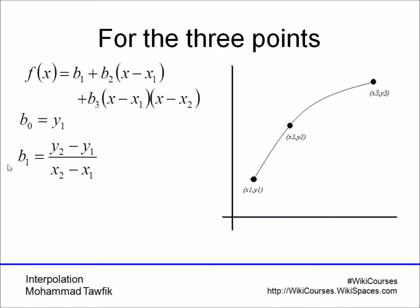b2 in this equation equals y2 minus y1 over x2 minus x1. And you can get the third constant, b3, as the difference between the slopes, as you can see here, difference between the slopes over the whole distance, which is more or less equivalent to the second derivative.